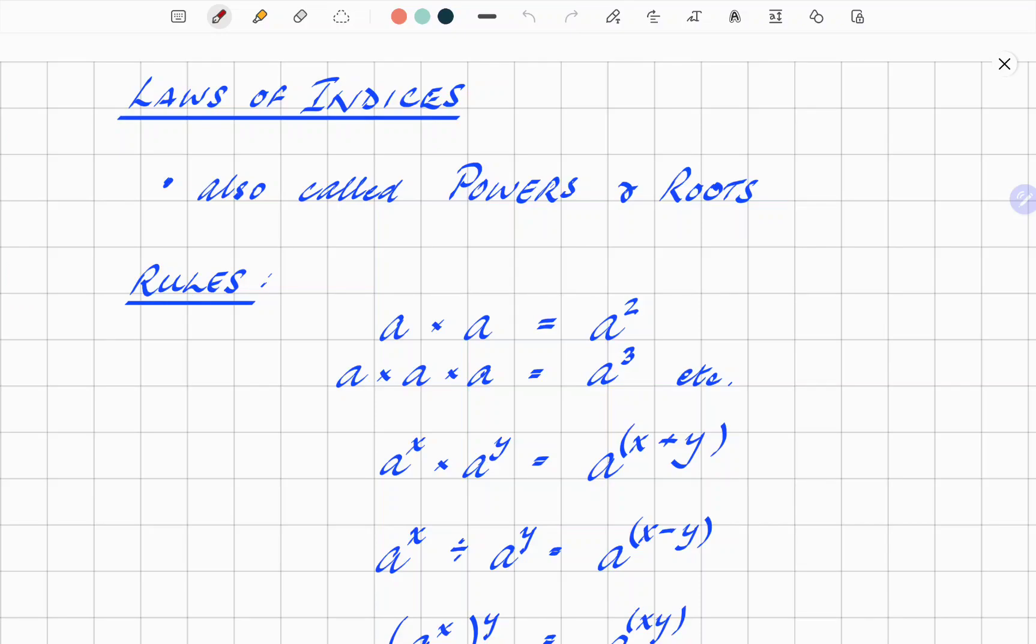The indices is basically the power that you have of any number. So let's say A is a number, and I have A to the power of 5. That is your index, and it can be called power, root even, and order. So all of these words, depending on where you're learning your maths and what textbook you're using, they all mean the same thing. Also known as powers and roots, and even order.